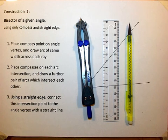Construction 1. Constructing a bisector of a given angle using only compasses, a straight edge such as a ruler, and a pencil.